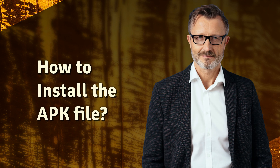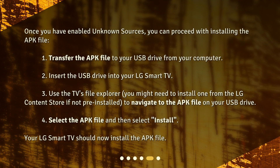How to install the APK file? Once you have enabled unknown sources, you can proceed with installing the APK file. 1. Transfer the APK file to your USB drive from your computer. 2. Insert the USB drive into your LG Smart TV. 3. Use the TV's File Explorer — you might need to install one from the LG Content Store if not pre-installed — to navigate to the APK file on your USB drive. 4. Select the APK file and then select Install. Your LG Smart TV should now install the APK file.